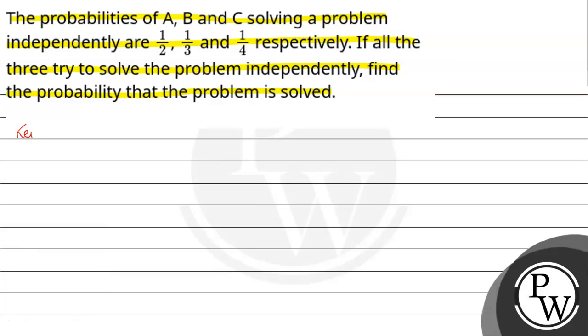Let us have the key concept for the given process. The key concept here is that suppose an event A has a known probability. Then the probability of A bar, the complement, is 1 minus the probability of A. This is the important point.